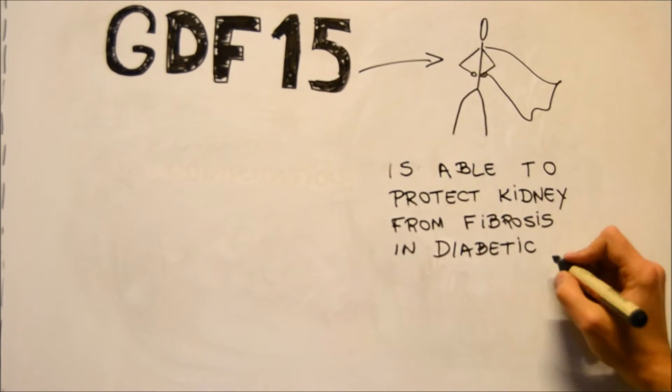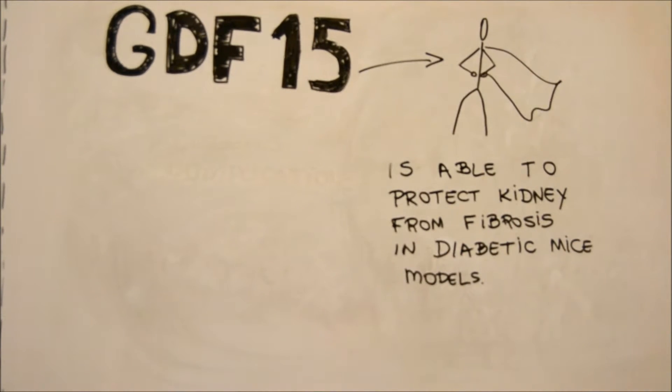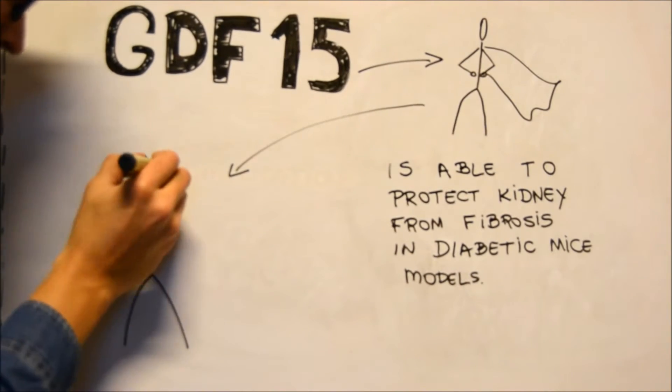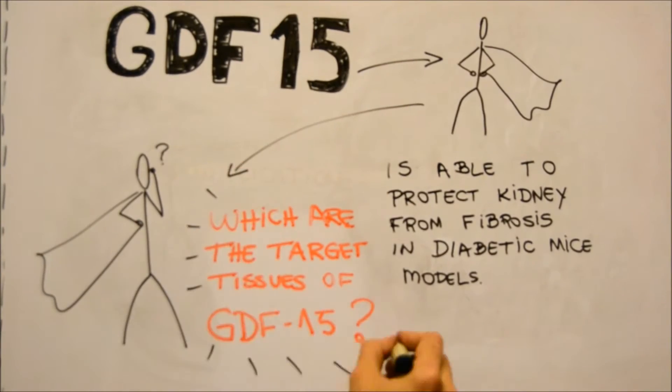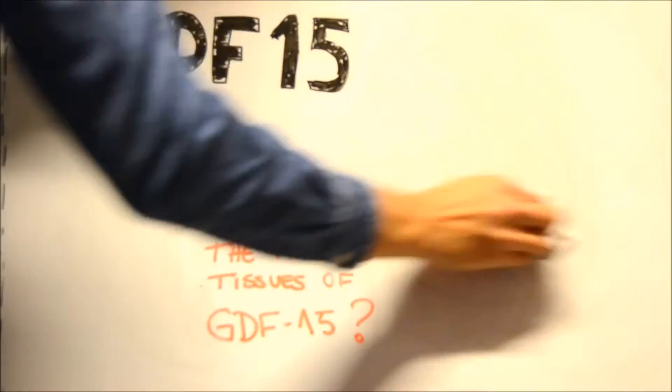Taking into account the previous knowledge about GDF-15, we believe that it can do much more. Not only may it protect the kidney from fibrosis, but also other tissues, for example the retina and the heart. That brings us to the question: which are the target tissues of GDF-15?